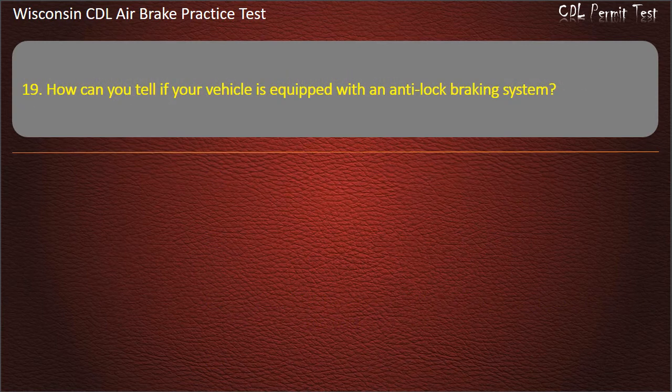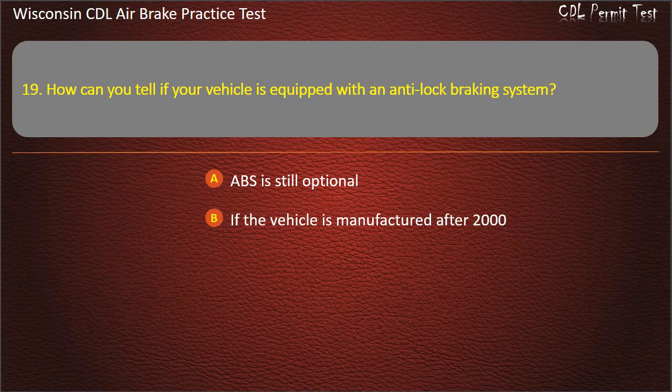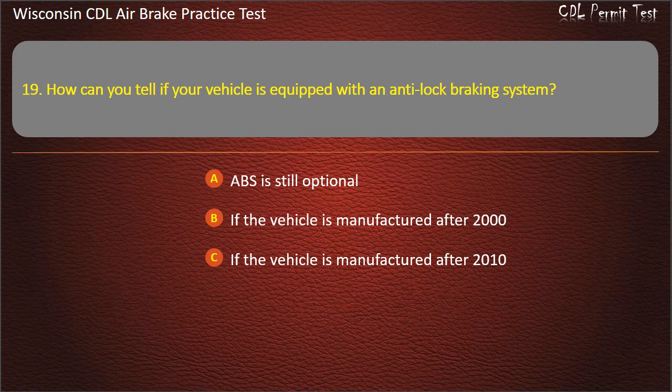Question 19. How can you tell if your vehicle is equipped with an anti-lock braking system? ABS is still optional if the vehicle is manufactured after 2000. If the vehicle is manufactured after 2010. If the vehicle is manufactured after 1998.